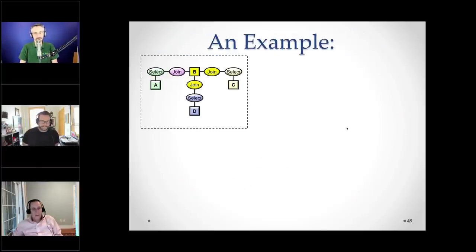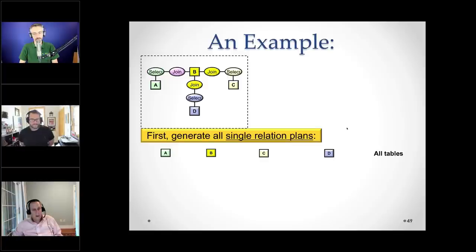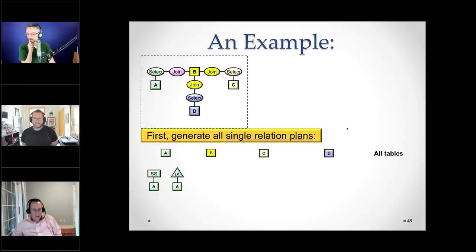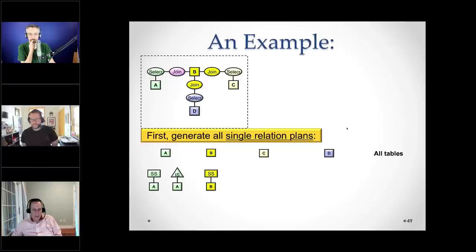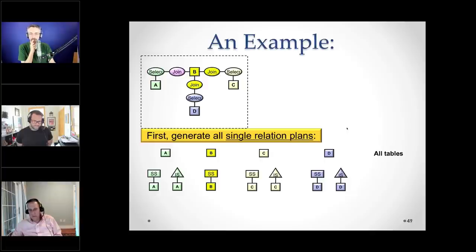The solution to this problem is dynamic programming, done either bottom-up or top-down. The idea is to avoid enumerating the space completely and to prune aggressively — though there are heuristics that sometimes cause the best plan to be missed. The approach performs the optimization in n passes where n tables are joined. Pass one finds the best lowest-cost single-relation plan, and pass two asks: here's the best way of doing these single-relation plans — what's the best way of joining to another relation?